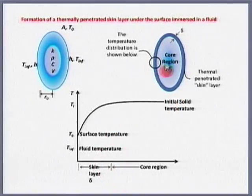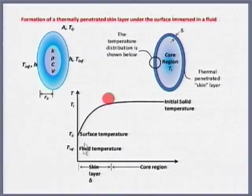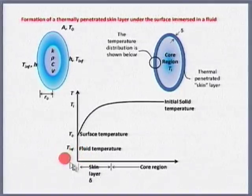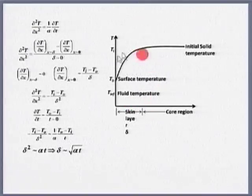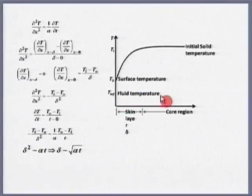This layer in which there is a temperature gradient — let me call it the skin layer, delta. The initial temperature is T_i, the fluid (air) temperature is T_∞, and the surface temperature is T_0. T_i is the initial solid temperature, T_0 is the surface temperature, and T_∞ is the fluid temperature.